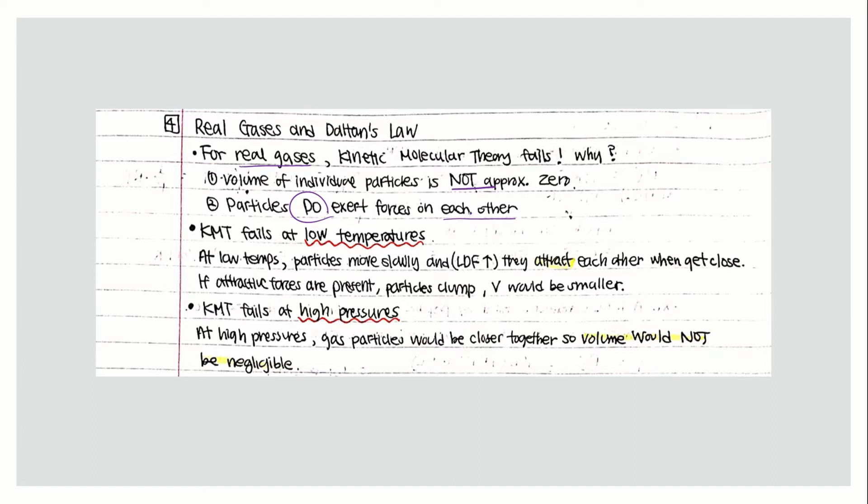For ideal gas, the particles are not supposed to exert forces on each other, and there should not be any force of attractions between each other. The volume of individual gas particles is supposed to be zero or approximately zero, but for real gases that does not apply.